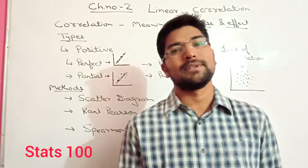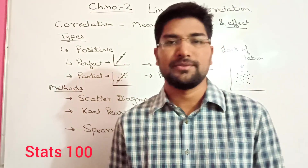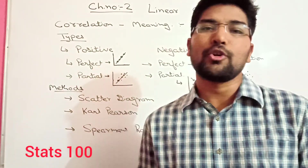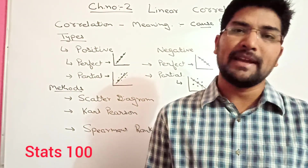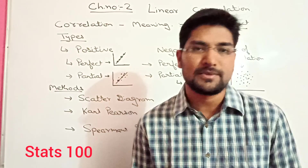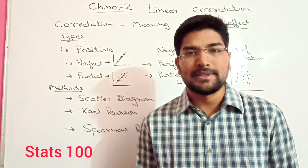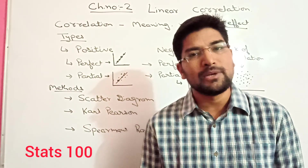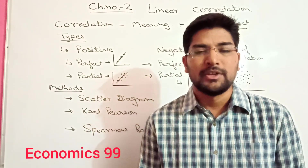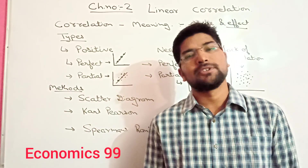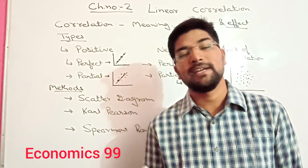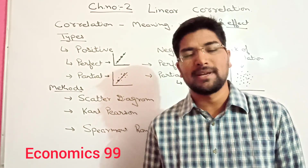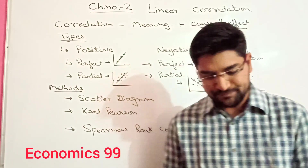Now coming on to the types of correlation. When we talk about the types of correlation, we have three types: positive, negative, and lack of correlation.